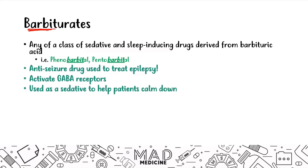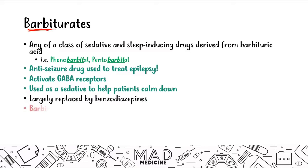Barbiturates are usually anti-seizure drugs used to treat epilepsy. They activate GABA receptors and are used to sedate and calm patients. These have largely been replaced by benzodiazepines — barbiturates are kind of the old-school cousin of benzos — but they're still something you need to know for Step 1, as you may be presented with barbiturate abuse in USMLE vignettes.